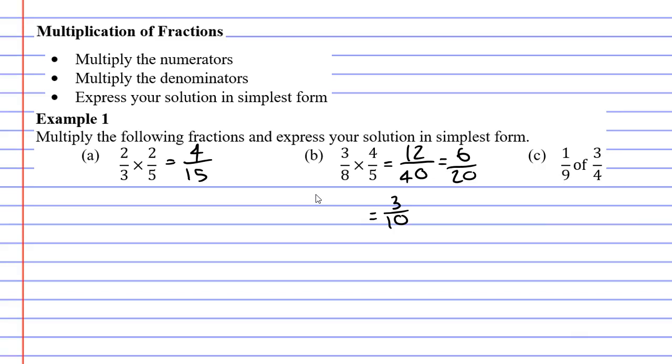Let's now move on to question C. Remember that the word of means to multiply. So we'll rewrite this as 1 over 9 times 3 over 4. Multiplying our numerators we get 1 times 3 is 3, and 9 times 4 is 36.